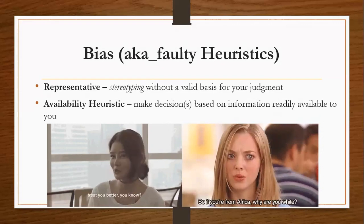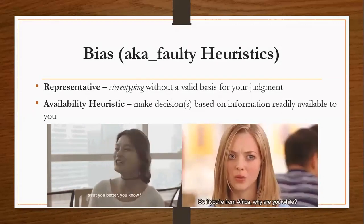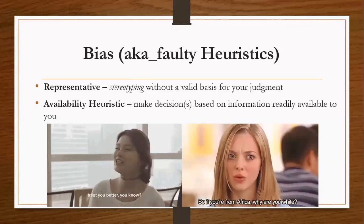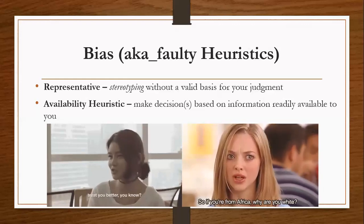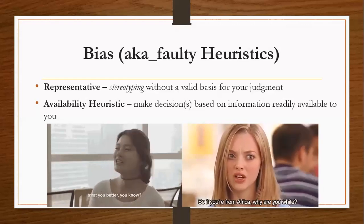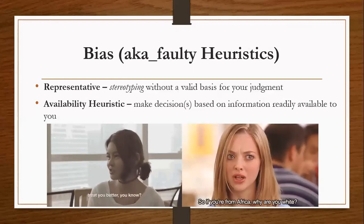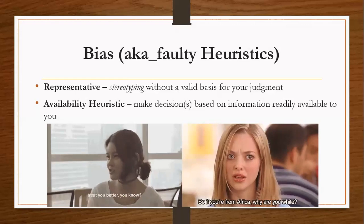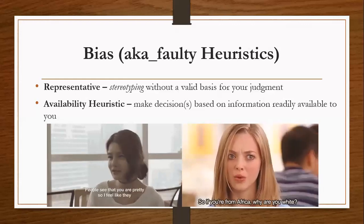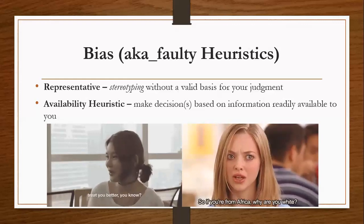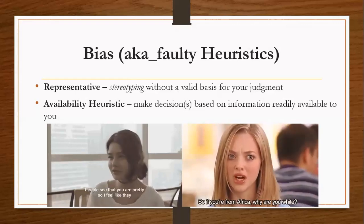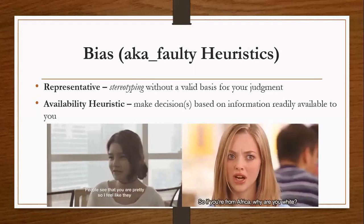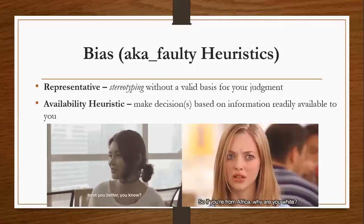Another heuristic is the availability heuristic, where we make decisions based on information readily available to you as the individual using it. So in this gif, we see a girl asking 'if you're from Africa, why are you white?' — because in her availability heuristic, it's the only information she has about the continent.